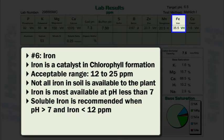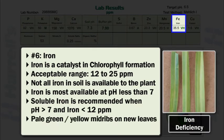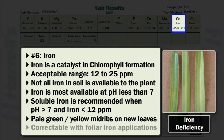Iron deficiency symptoms are often expressed on new leaves which are thin and pale green to yellow between the mid ribs, often referred to as intravenal chlorosis. Veins and ribs typically fade first. Dieback may occur in acute cases. Iron deficiency is easily and rapidly correctable using foliar iron applications.